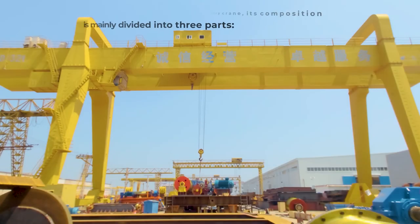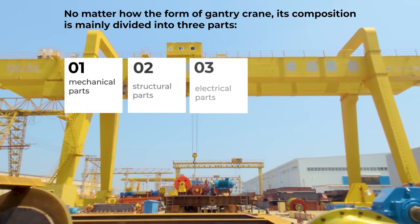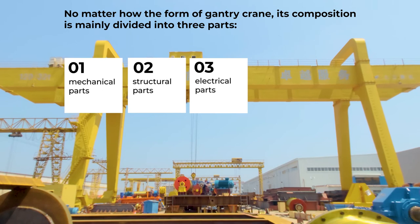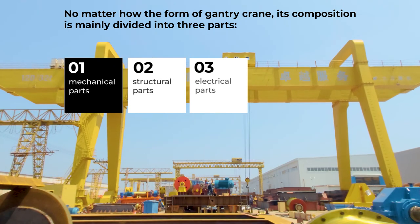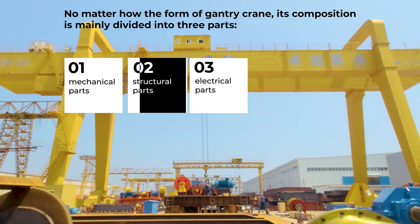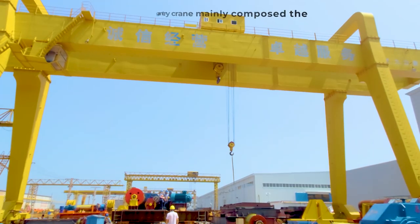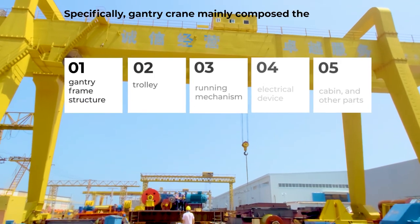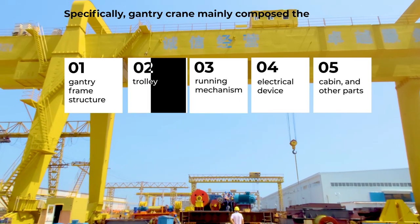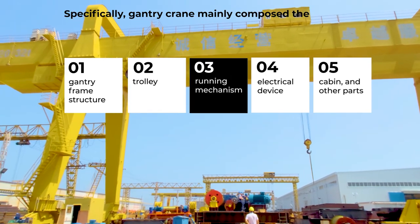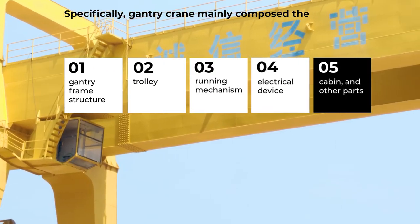Gantry Cranes. No matter the form of gantry crane, its composition is mainly divided into three parts: mechanical parts, structural parts, and electrical parts. Specifically, a gantry crane is mainly composed of the gantry frame structure, trolley, running mechanism, electrical device, cabin, and other parts.